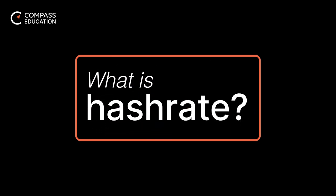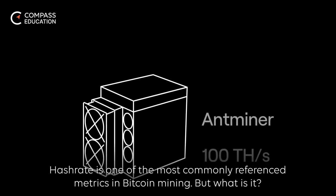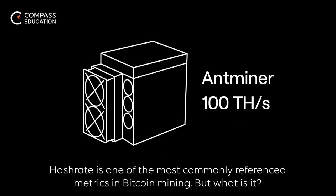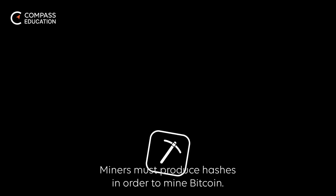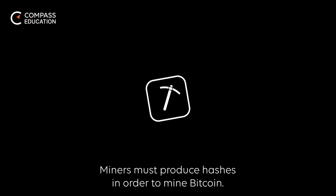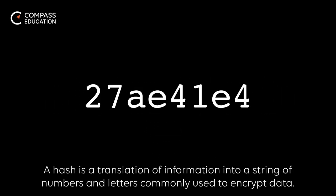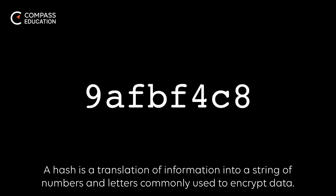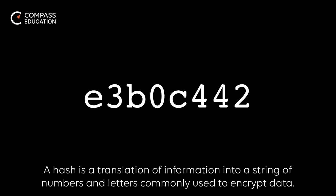What is hashrate? Hashrate is one of the most commonly referenced metrics in Bitcoin mining. But what is it? Miners must produce hashes in order to mine Bitcoin. A hash is a translation of information into a string of numbers and letters, commonly used to encrypt data.